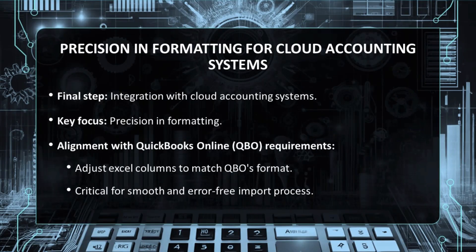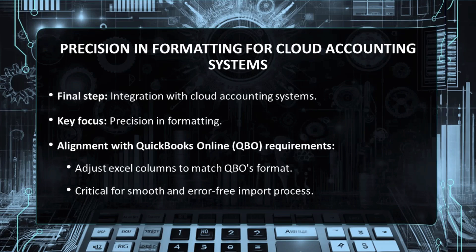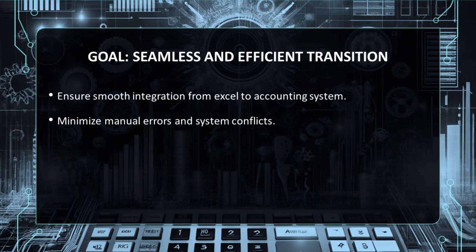The last leg of our journey takes us into the realm of cloud accounting systems, where precision in formatting becomes absolutely key. For those using QuickBooks Online, it's essential to align the Excel columns with QBO's format requirements. This might include adjusting account names or types — a critical step to guarantee a smooth and error-free import process. The goal is to ensure that the transition from Excel to your accounting system is as seamless and efficient as possible, reducing the likelihood of manual errors or system conflicts.